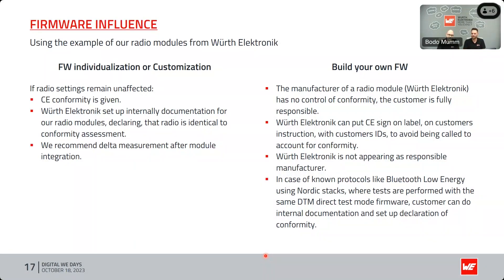The CE conformity is for the European Union, but since 2020 one country left the EU — what about the UK after Brexit? The UK directives were adopted from the Radio Equipment Directive, and EU standards became the designated standards for the UK as well. The UK government has announced it will extend recognition of the CE marking for placing most goods on the market in Great Britain indefinitely. Radio products are within the scope of this announcement, so the CE marking will continue to be valid in Great Britain until further notice — no UK CA is required.